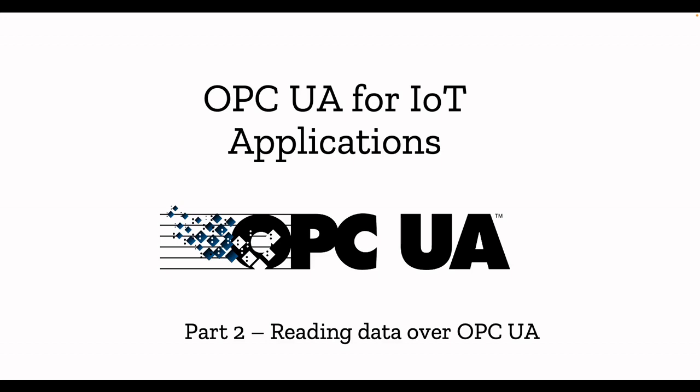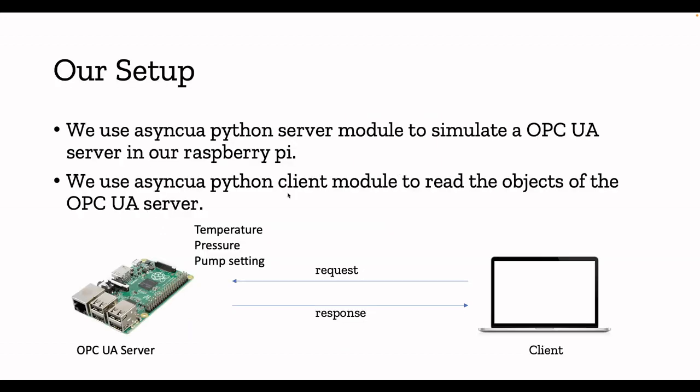As we always do, let's get hands-on — that's the best way to learn something. In part two today, I'm going to show you how we can use OPC UA to read some information via the OPC UA protocol. You can apply this in any of your Industry 4.0 solutions or use this code to read data from your OPC UA servers.